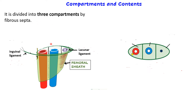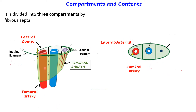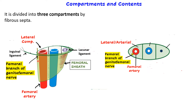The femoral sheath is divided into three compartments by two fibrous septa. In cross-section, the lateral-most compartment is called the arterial compartment, because the femoral artery passes through it. Along with the femoral artery, anterolaterally in this compartment, you also have the femoral branch of the genitofemoral nerve. So the lateral compartment contains two structures: the femoral artery and the femoral branch of the genitofemoral nerve.